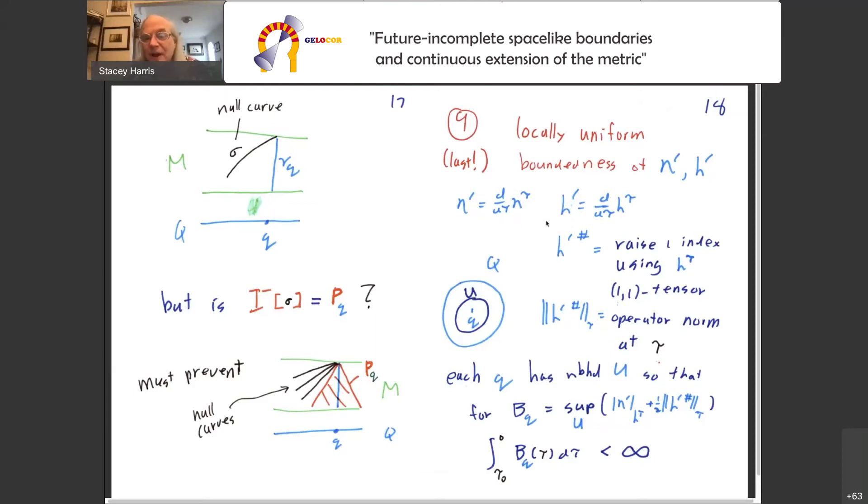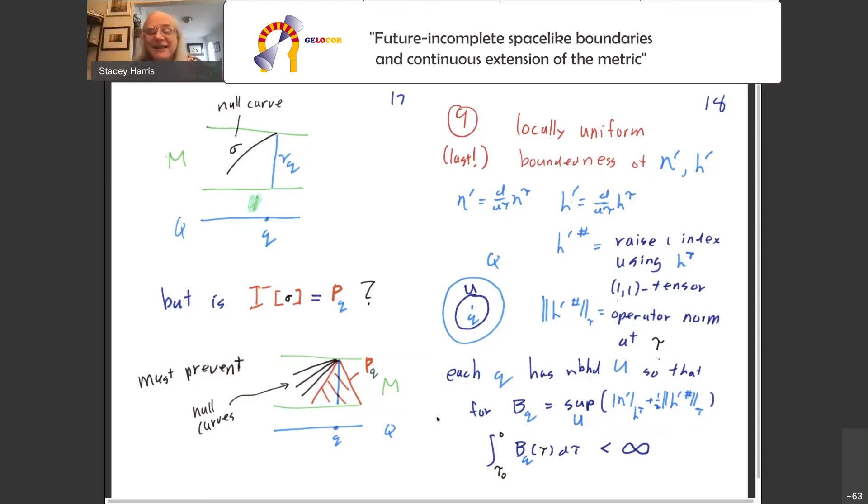Our last assumption prevents that. I have to look at eta prime and h prime, where I mean taking derivatives with respect to tau. And remember that h is a rank 2 tensor. I'm going to look at h prime sharp, by which I mean raise one index using h itself. That gives me a 1-1 tensor. And in tau, I can get an operator norm for h prime sharp. Then I have to insist that for every point q, there's some neighborhood u. If I take the supremum over u of the length of eta prime and the operator norm on h prime sharp, that that sup is integrable. Alternatively, I could say do it separately with each one with the eta prime and h prime sharp and say those are integrable. And that's the last of my assumptions.